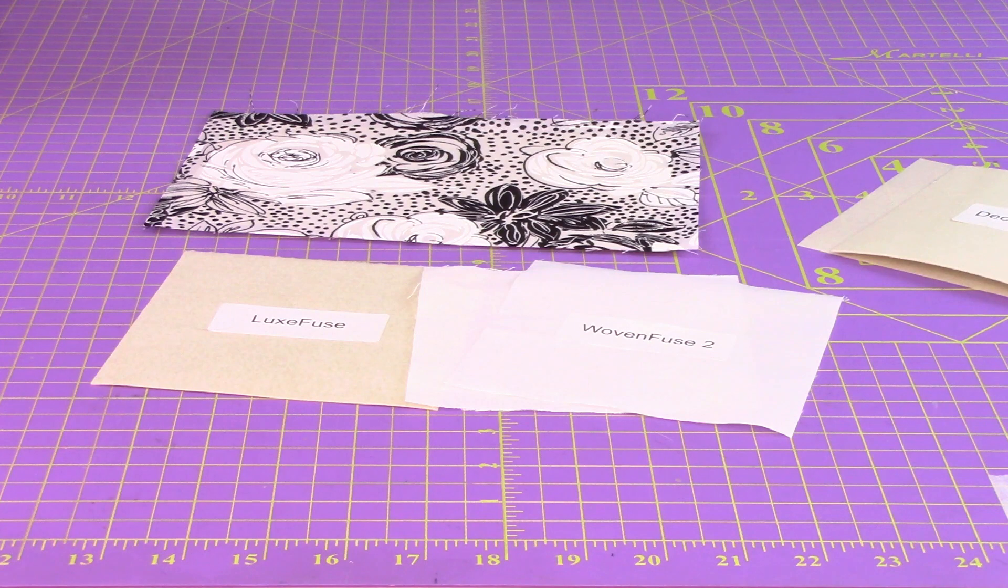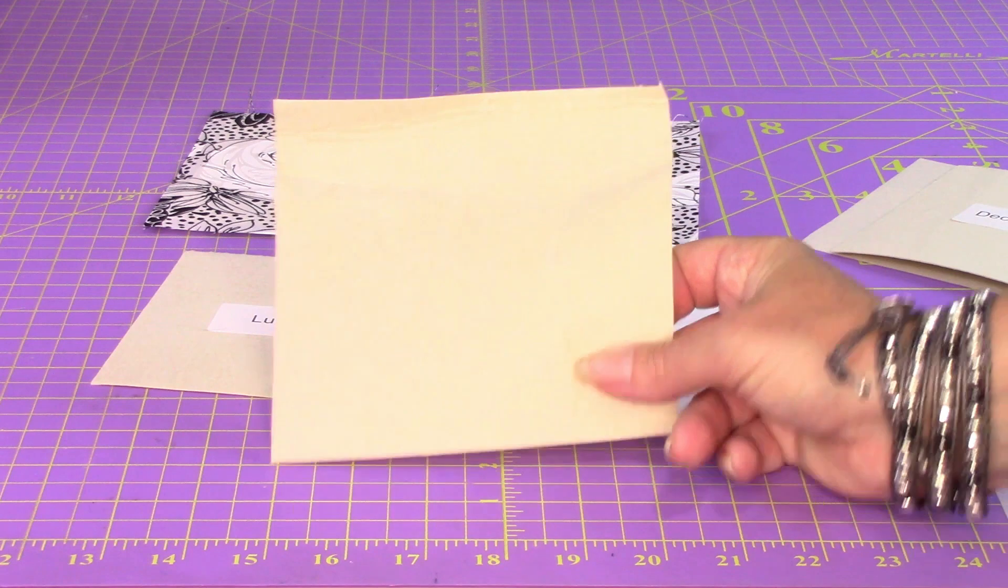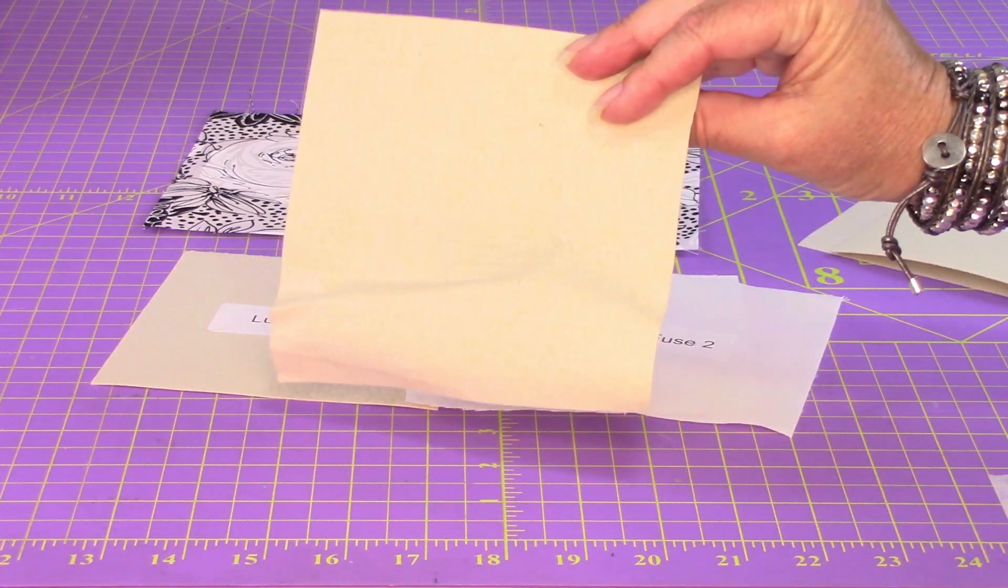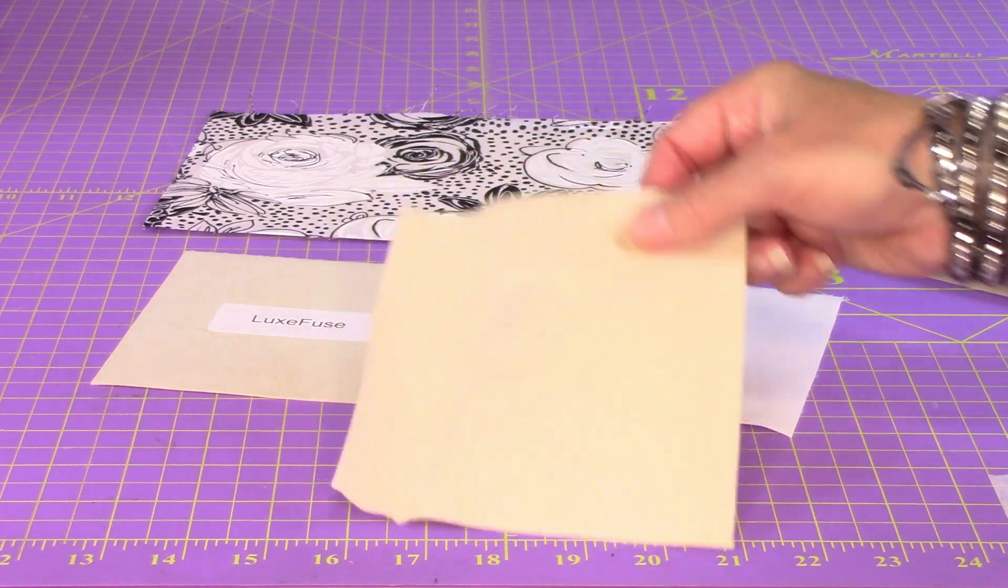When your interfacings come to you in the mail, they are folded up really nicely and they're all in plastic sleeves. When you get them, unfold them, unfold them and roll them up on a tube if you can. That's your best bet because it will help the creases to fall out of your stabilizer.